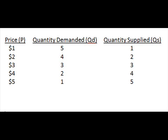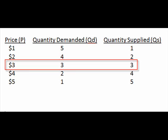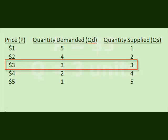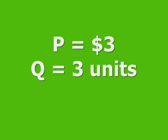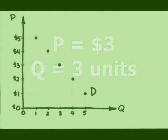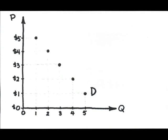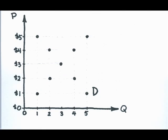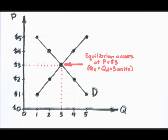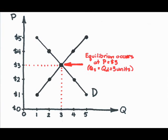Without even looking at a diagram, where is equilibrium? Equilibrium occurs at a price of $3, where the quantity demanded equals the quantity supplied at 3 units. Please note that the fact that price and quantity are both 3 is just a coincidence — they will not always be the same. If I plot out these numbers, first the demand figures, then supply, I reach the same conclusion with the diagram: equilibrium occurs at a price of $3, where the quantity supplied equals the quantity demanded at 3 units.